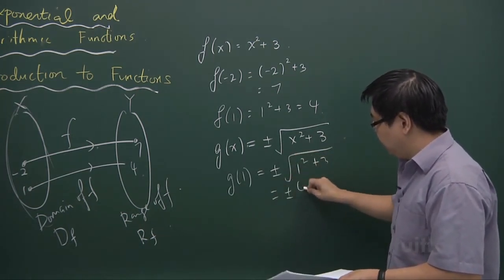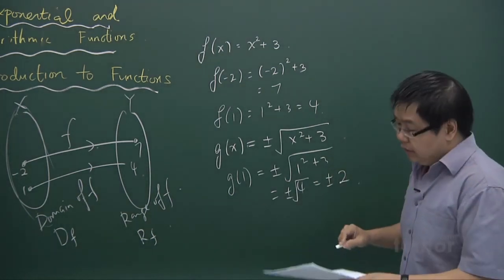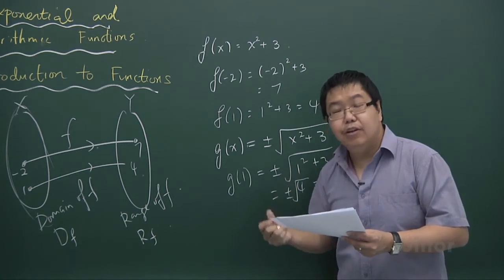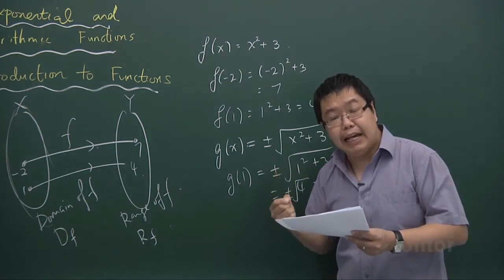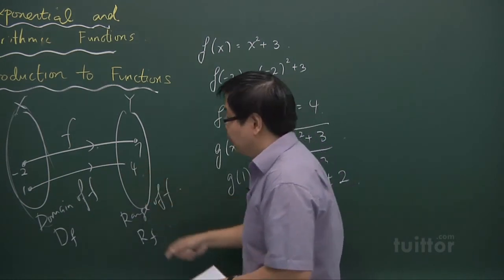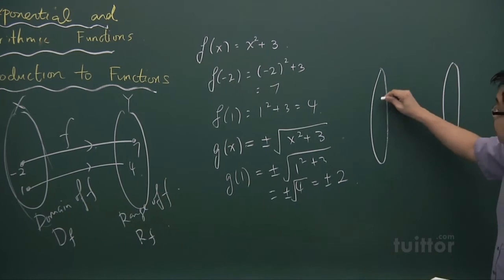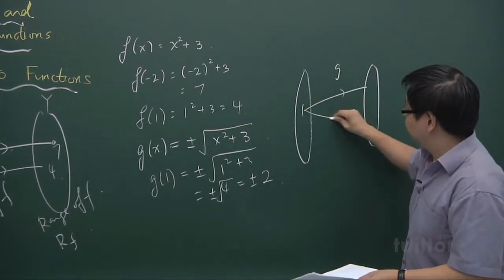Because as I mentioned to you, a function is one which assigns each and every element here to one and only one element y. So you cannot allow a situation where it maps the value 1 to two values here.